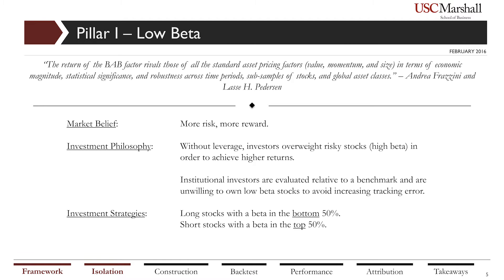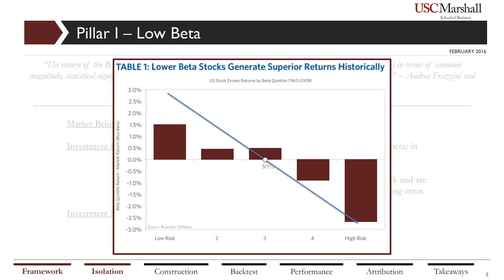For our low beta factor, the market currently believes more risk equals higher returns. Our investment philosophy is that without leverage, investors overweight risky stocks in order to achieve excess returns. Frazzini supported this belief in his academic paper, 'Betting Against Beta.' Additionally, institutional investors are evaluated relative to their benchmark tracking error, which discourages investment in low risk stocks. We implemented this by buying stocks with a beta in the bottom 50th percentile and shorting stocks in the top 50th percentile. Empirical evidence from 1963 to 2008 shows low beta stocks in the lowest quintile provided an average excess return of 1.5% annually, while the highest quintile returned 2.5% less annually.